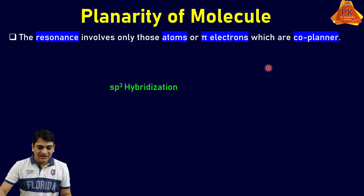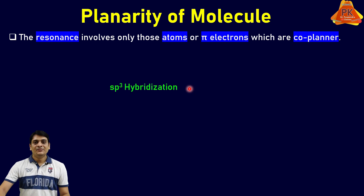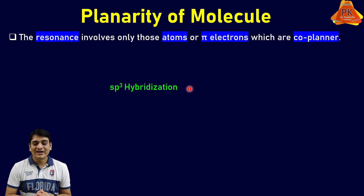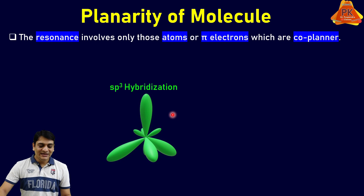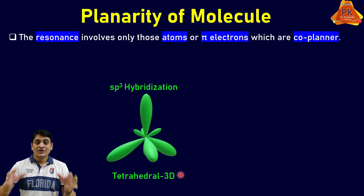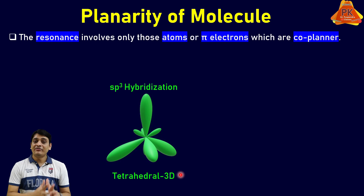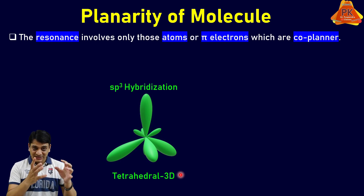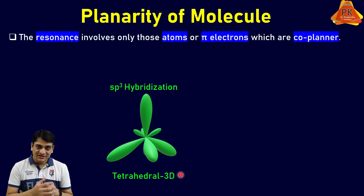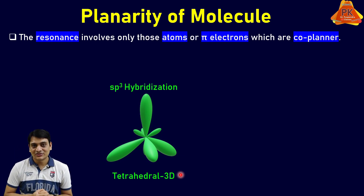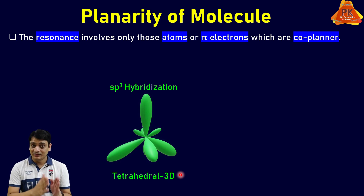Now let's consider the effect of sp3 hybridization on the planarity of the molecule. In sp3 hybridization, the structure is tetrahedral and three-dimensional. I have already discussed the details about hybridization in a complete 3D animation in my previous video, titled 'Hybridization in Educational Film.' The link of that video is given in the description. For better understanding, let's watch the clip of sp3 hybridization from that video.